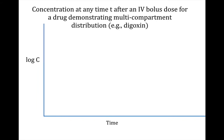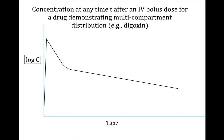Let's begin by looking at the concentration at any time t after an IV bolus dose for a drug demonstrating multi-compartment distribution, such as digoxin. The best way to visualize that is to plot it on a log concentration versus time plot, because that demonstrates the multi-compartment nature of the drug best. For example, after an IV bolus, concentrations can be as high as 10 and then rapidly go down to anywhere from 1 to 2. This distribution plus elimination portion of the curve creates a clear break over about a four to six hour time period.